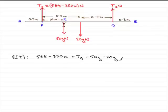So, this is the resultant force acting on the beam in the vertical direction, and that resultant force is equal to zero because it's in equilibrium.